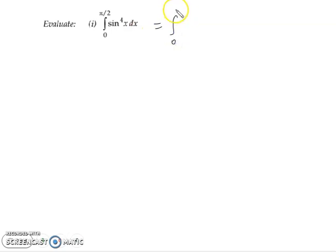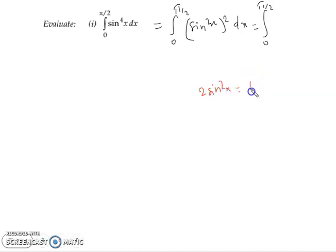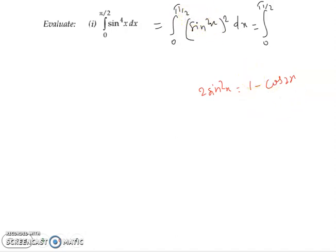We can write this term with the limit from 0 to π/2, and sin to the power 4x is equal to (sin²x)² dx. We know the formula: 2sin²x = 1 - cos2x, so sin²x = (1 - cos2x)/2.